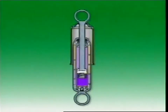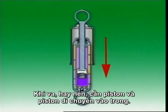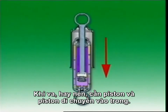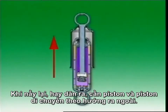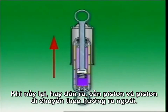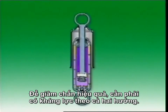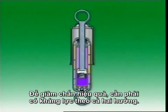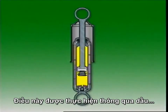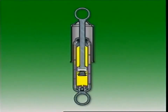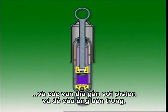During bumps or compression, the rod and its piston move into the shock absorber. In rebound or extension, the rod and piston move out of the shock absorber. For dampening to be effective, resistance is needed in both directions. This is provided by the oil and by disc valves attached to the piston and the base of the inner tube.